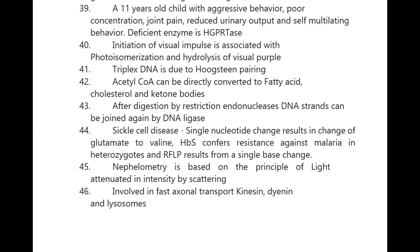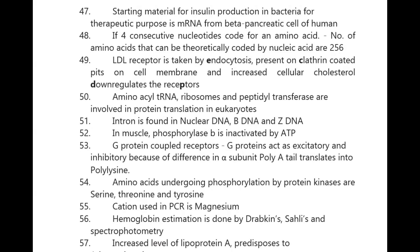The starting material for insulin production in bacteria for therapeutic purposes is mRNA from beta pancreatic cells of humans. If four consecutive nucleotides code for an amino acid, the number of amino acids that can be theoretically coded by nucleic acid is 256. The LDL receptor is taken up by endocytosis, is present on clathrin-coated pits on the cell membrane, and increased cellular cholesterol downregulates the LDL receptor.